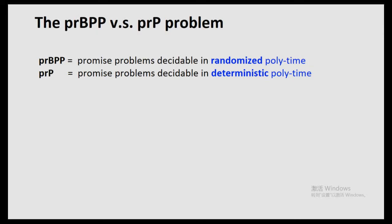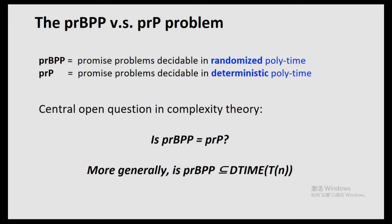By BPP — actually it's like promise BPP — we mean a class of promise problems that are decidable in randomized polynomial time. And the class P, so it's actually promise P, is a promise problem that's decidable in deterministic time. For simplicity, we'll just call them BPP and P. Randomized algorithms can toss a coin, but deterministic algorithms cannot. So a central open question in complexity theory is whether BPP equals P.